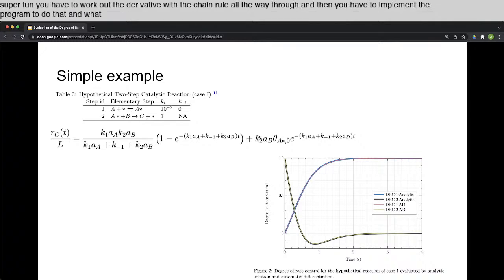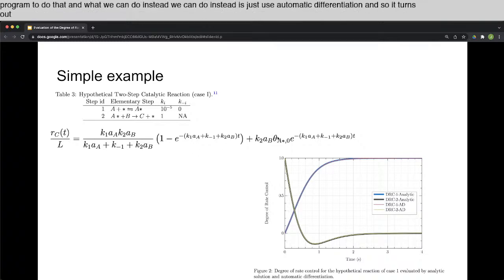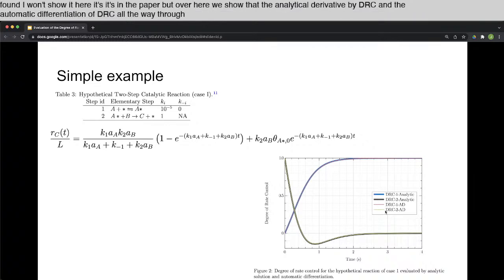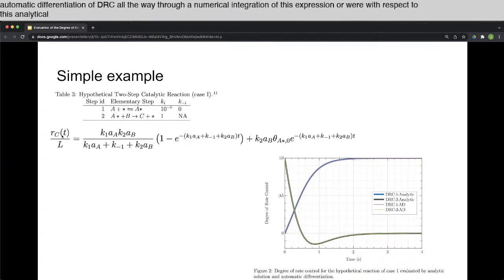And what we can do instead is just use automatic differentiation. And so it turns out the derivative of this is known and can be found. I won't show it here. It's in the paper. But over here we show that the analytical derivative by DRC and the automatic differentiation of DRC, all the way through a numerical integration of this expression, or with respect to this analytical expression, are visually identical to each other. And it's much easier to do the automatic differentiation than it is to work out the derivative.